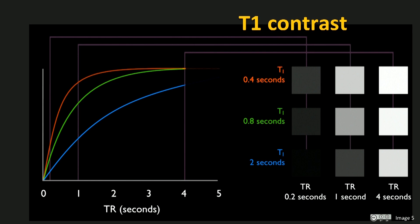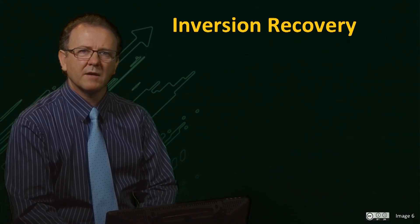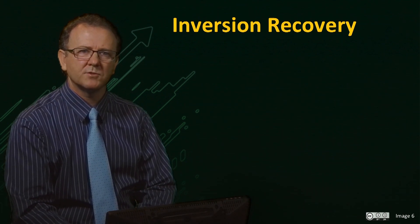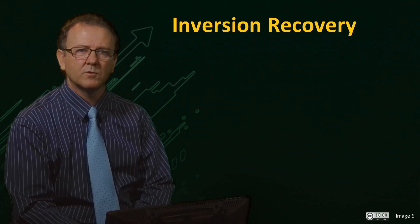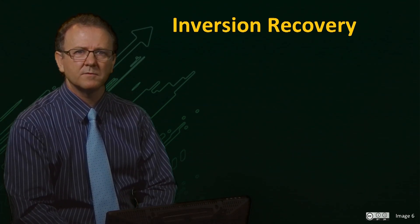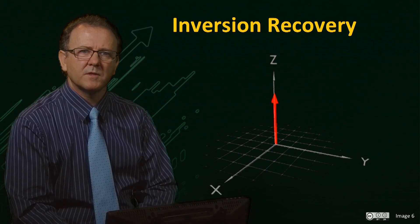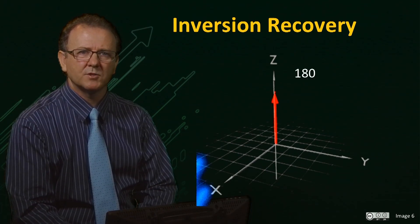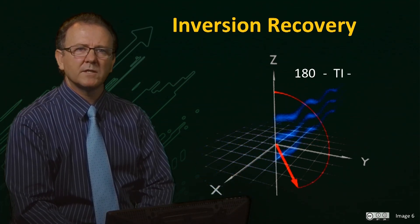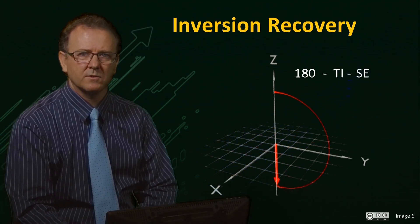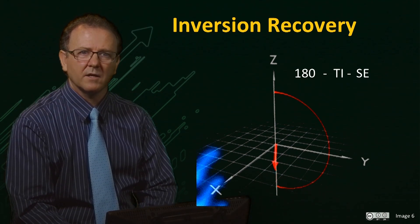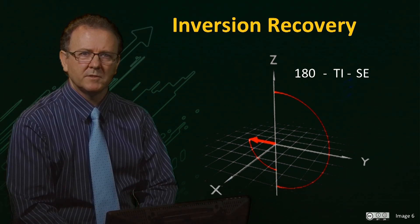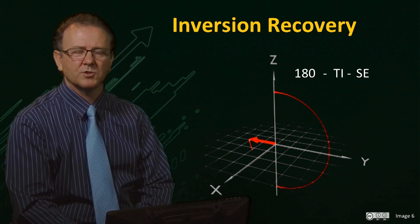The inversion recovery T1 sequence allows us to improve the contrast between tissues and selectively suppress the signal for tissues of a particular T1 value. To remind you of the inversion recovery experiment, a 180 degree inversion pulse is applied to the spins, then we wait a time for T1 relaxation to occur, here called TI for inversion time. And then the spin echo imaging sequence is applied to image the available longitudinal magnetization.